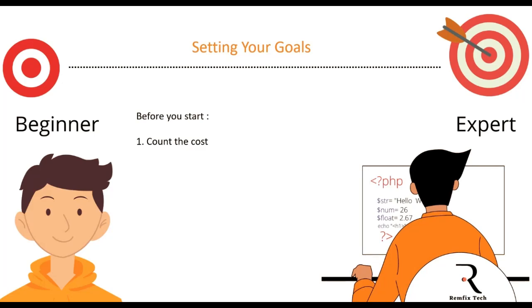You don't want to start and stop along the way — you want to start and finish. The second thing you have to do is have a focus: what will you do with this knowledge? You have to have a plan — whether it's to build your own business, get a new job paying $100k or more annually, or just become more tech savvy. Write this down.